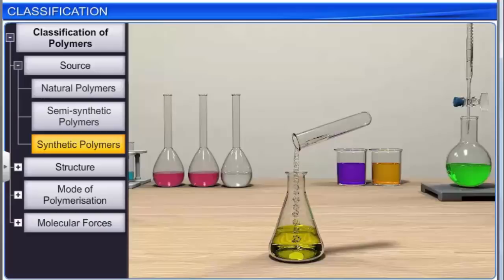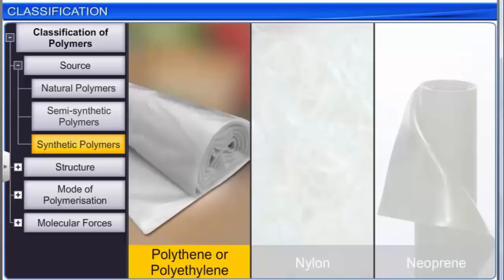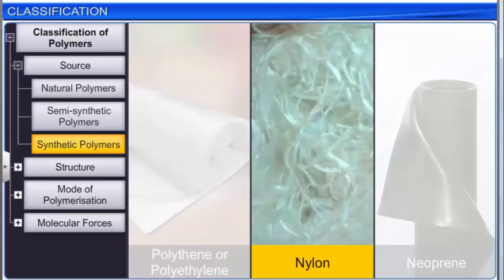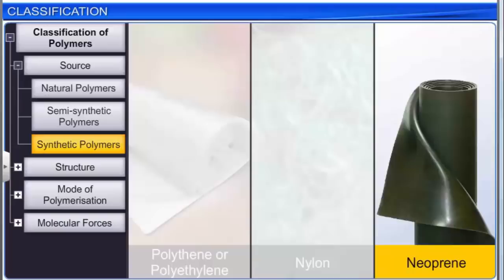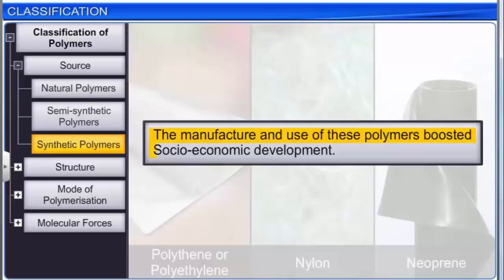Synthetic polymers are prepared in the laboratory. Examples include plastics such as polythene or polyethylene, fibers such as nylon, and synthetic rubbers such as neoprene. The manufacture and use of these polymers boosted socio-economic development.